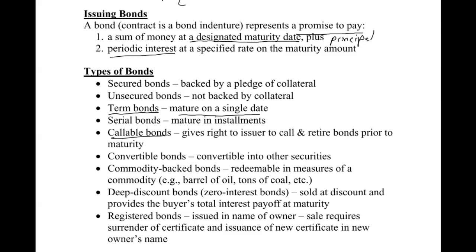Callable bonds give the right to the issuer to call and retire the bonds prior to maturity — so as the issuer, we can pay the bonds off earlier. Convertible bonds are convertible into other securities, typically common stock, and some books cover this in earnings per share. Commodity-backed bonds are redeemable in measures of a commodity like oil or gold. Deep discount or zero-interest bonds are sold at a discount and provide the buyer's total interest payoff at maturity, similar in concept to the non-interest-bearing notes from the current liabilities chapter.